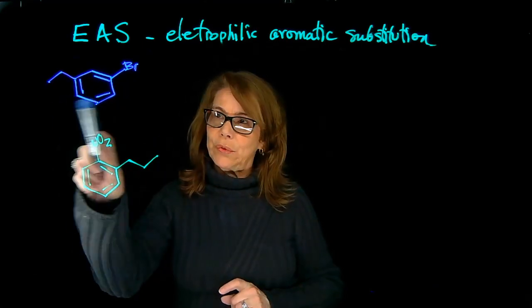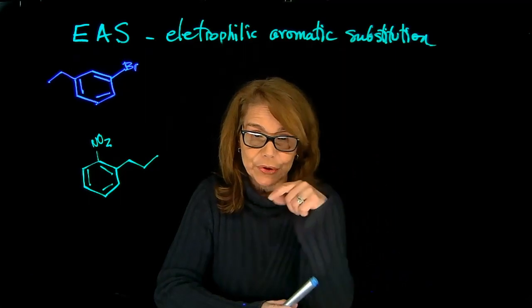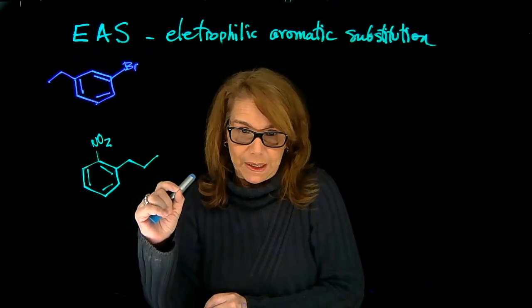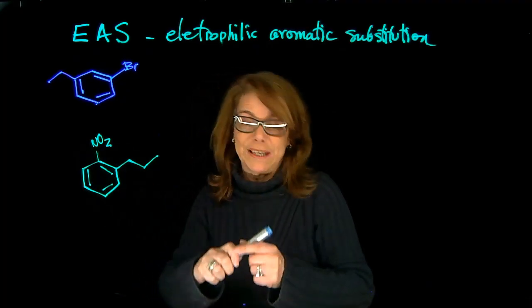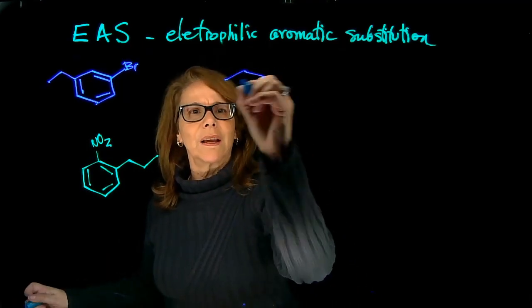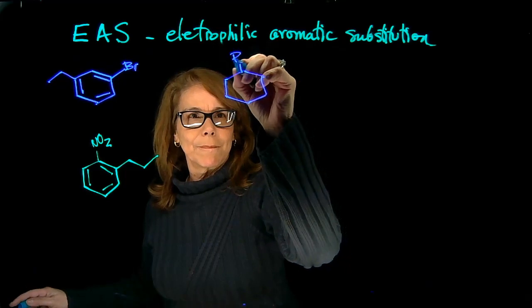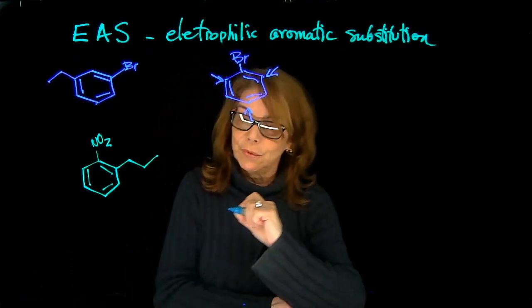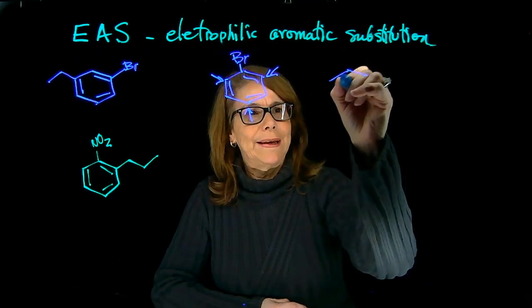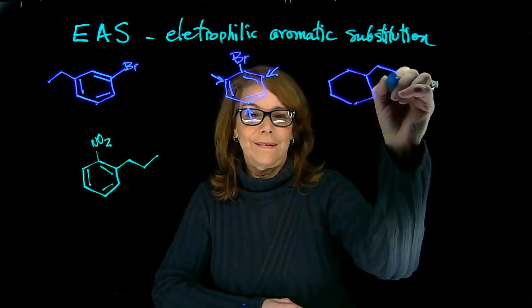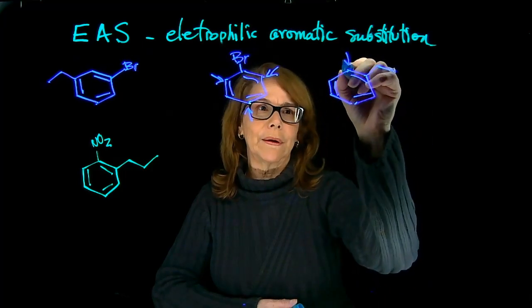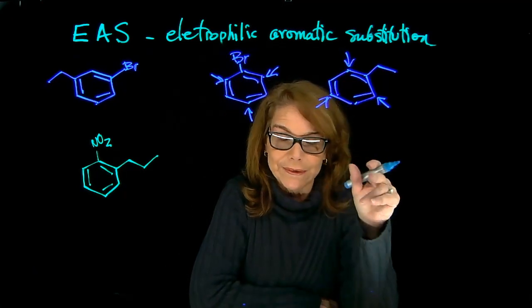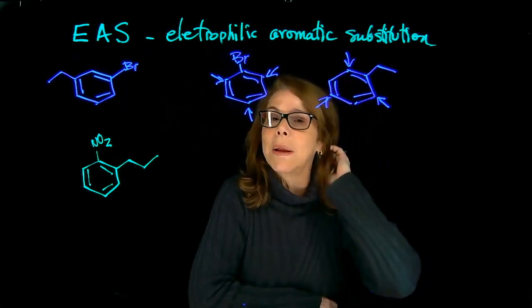Starting from benzene, how do I make that? Notice that these two substituents are meta to each other, so I need to install first a substituent that directs meta to install the second. I know that if I do bromination first, it won't work. Why not? If I do this, this is deactivating ortho-para directing, so it's not going to work. And if I do an alkylation and I install that, that is activating ortho-para directing, so ortho-para is not going to work. I need to install first a group that is actually meta directing.